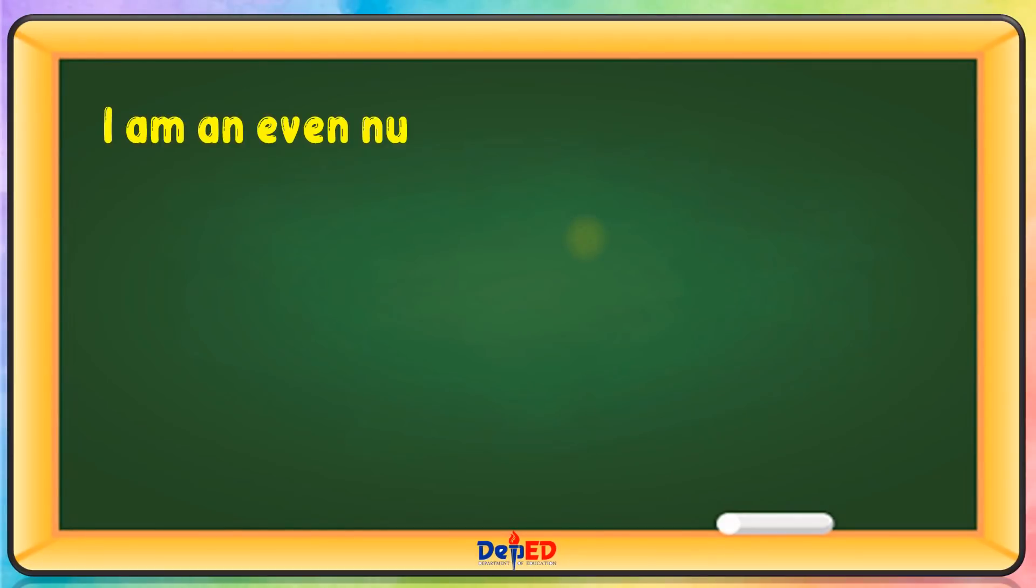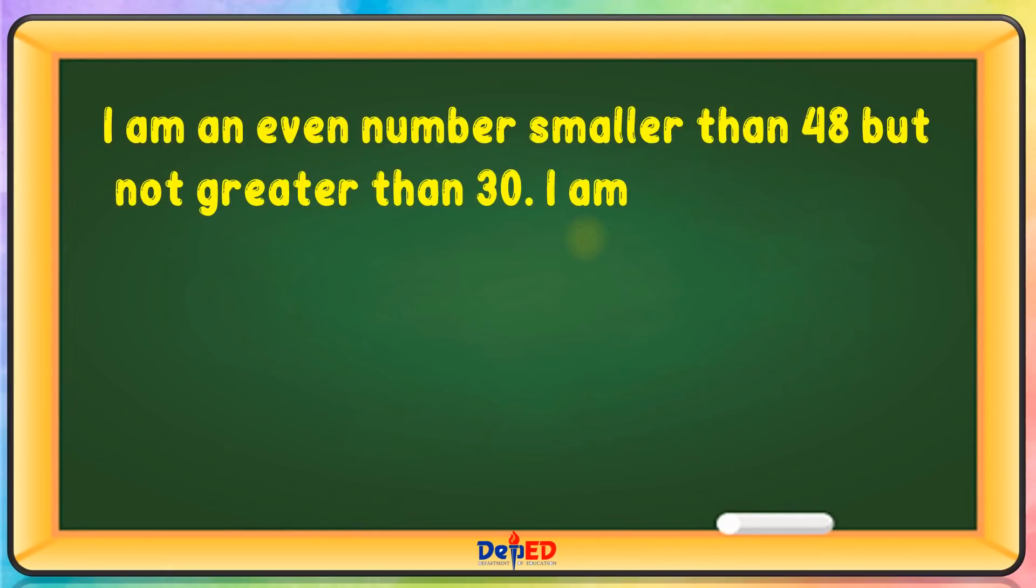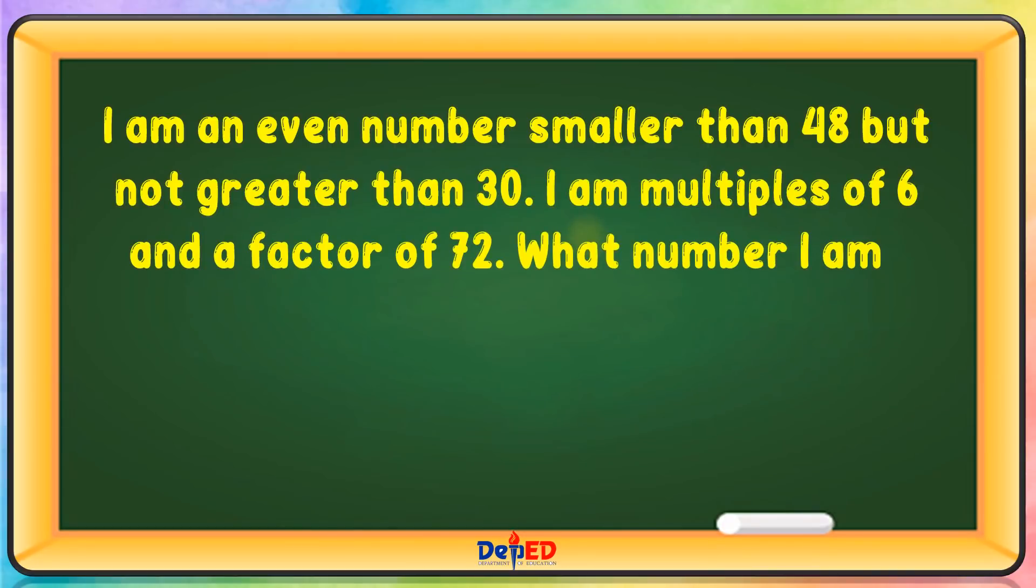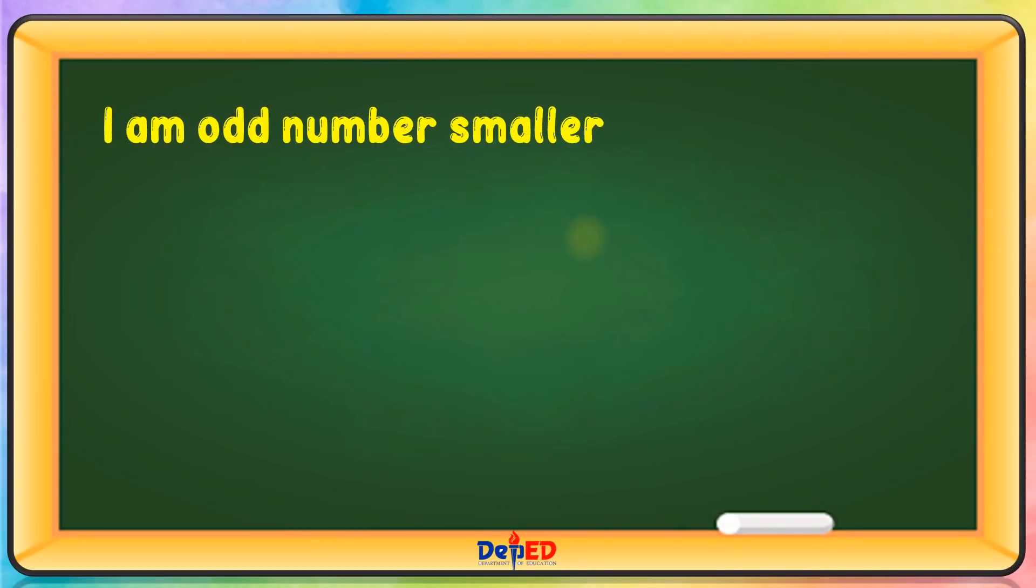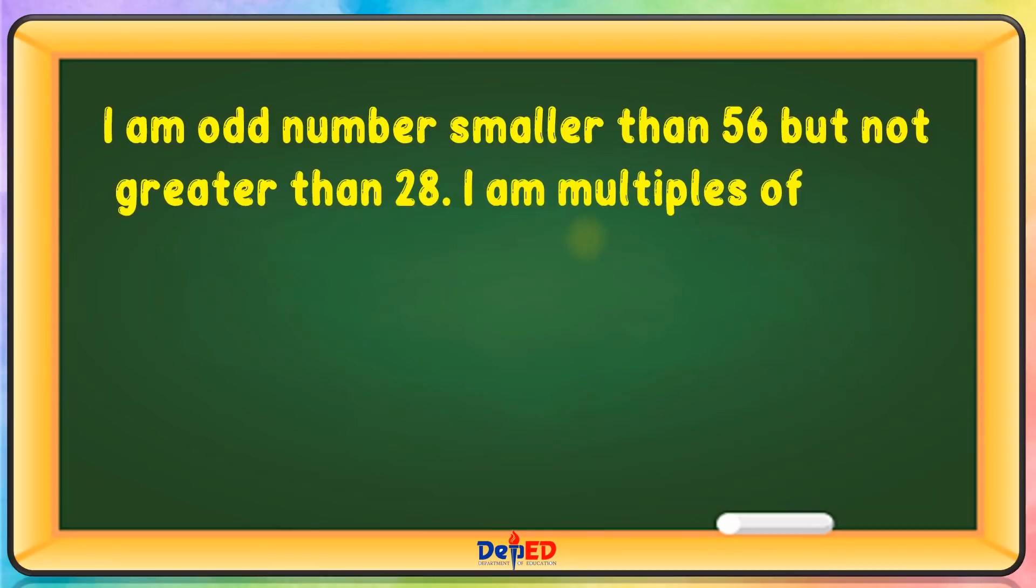I am an even number, smaller than 48 but not greater than 30. I am a multiple of 6 and a factor of 72. What number am I? 24. I am an odd number, smaller than 56 but not greater than 28. I am a multiple of 7 and has a factor of 7. I am 21.